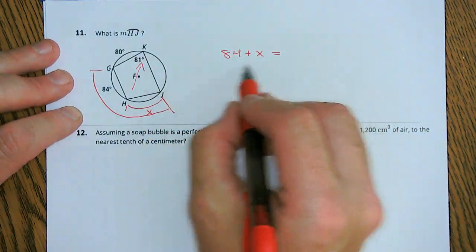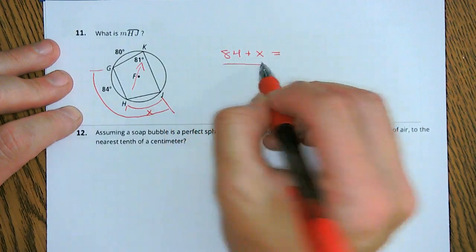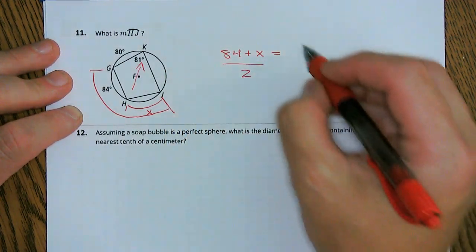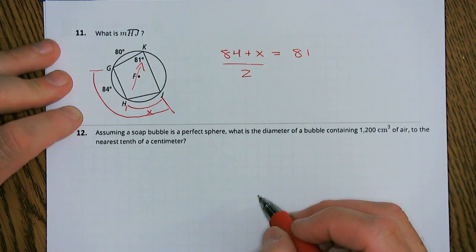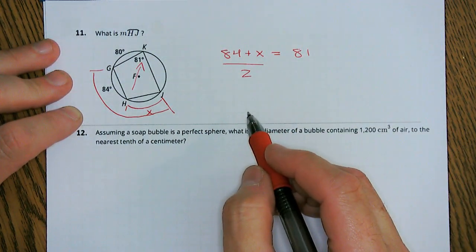So if we take those two angles, divide it by 2, all of that's going to be equal to 81. So let's do a little bit of cross-multiplication division.